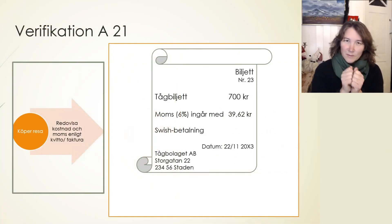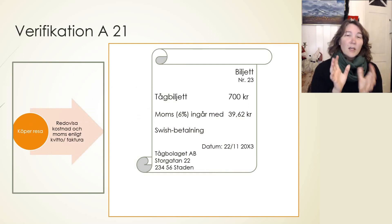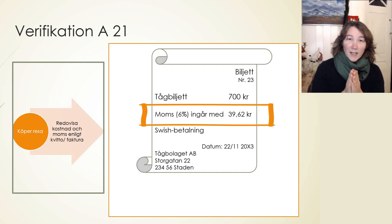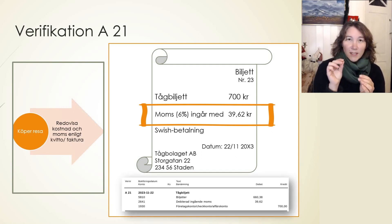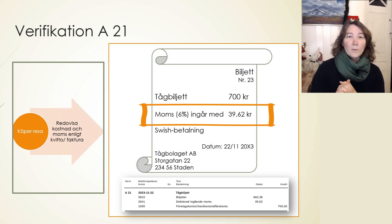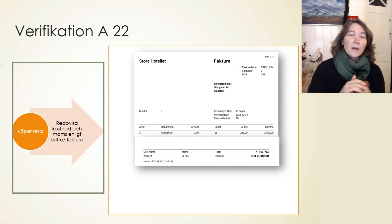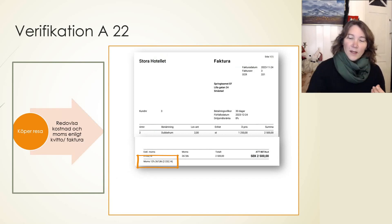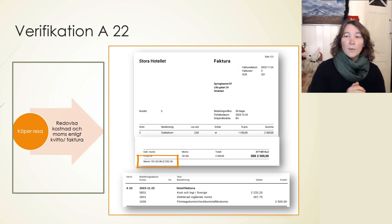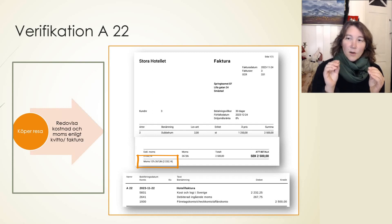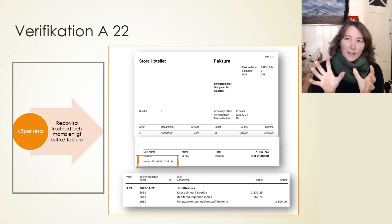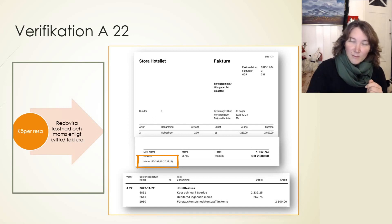So let's look at this a little bit more. You are buying the train ticket. On the train ticket you see that it's 6% VAT. In your bookkeeping, you will book the ingoing VAT as it says on this receipt — so 39.62 kronor will be the ingoing VAT for you. And the same goes with the hotel stay, the invoice from the hotel. Here we can see that the VAT is 12%. And when you post this in your bookkeeping, you will post an ingoing VAT with the 12% VAT — that was 267.86 kronor.